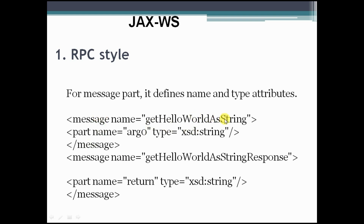You can have a message name like 'getHello' with a world response as a string, which has a parameter name also specified in string format. Then one more message begins — a message with a response name. This is called RPC style, which has a message and parameter name.